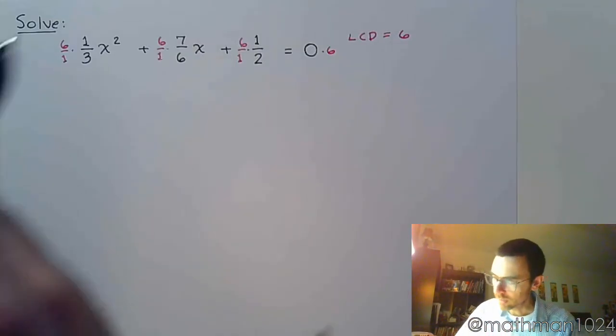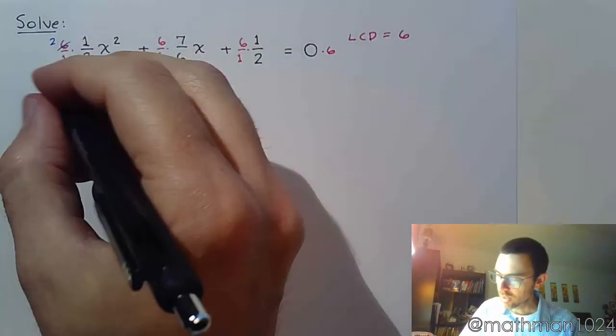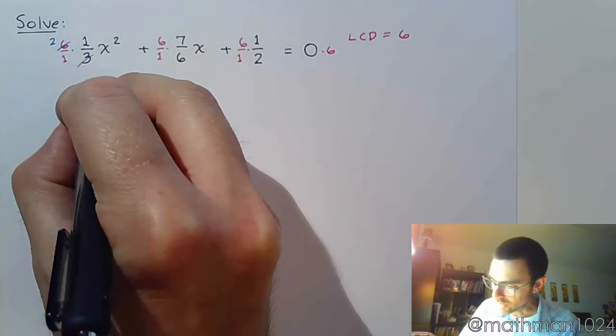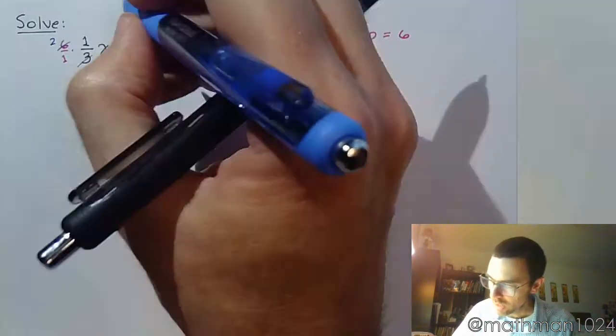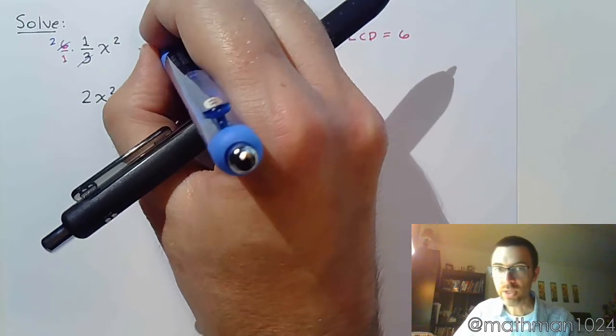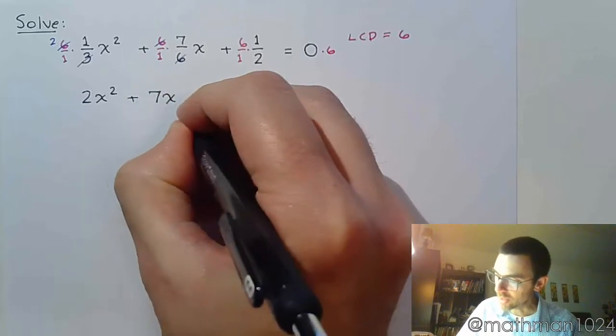So check this out. 3 goes into 6 twice. So this becomes 2 times 1x squared, so that's 2x squared. Here, the 6 reduces with the 6, and I now have plus 7x.